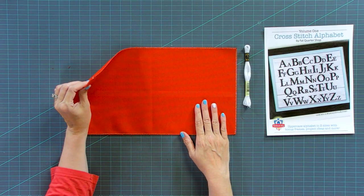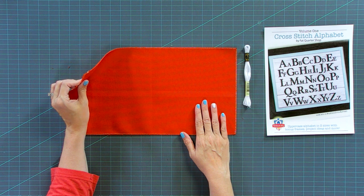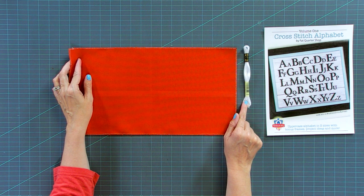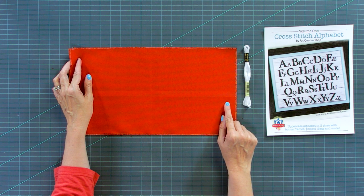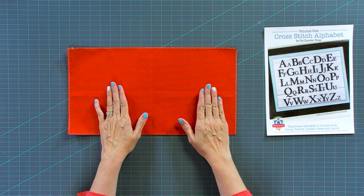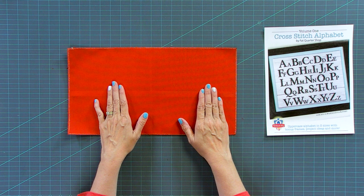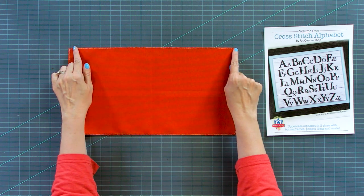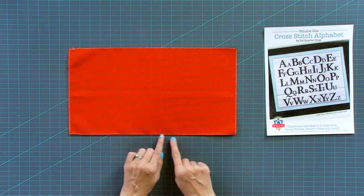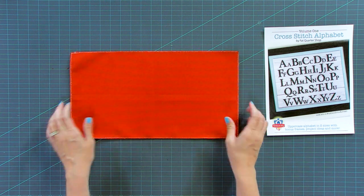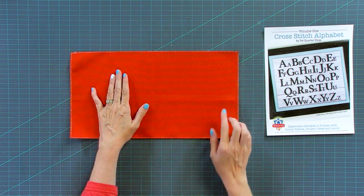For our cross-stitch fabric, we're using 25 count Lugana in the tomato color. And we stitched with B5200 and that matched our quilting fabric. You're gonna cut this rectangle nine by 16 and a half, and that is your cuff size. We do recommend serging or zigzag stitching around the edge because you are going to be using this a lot and you don't want any fraying.